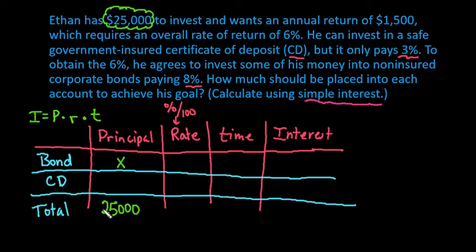Together, the bond plus the CD has to equal a total of 25,000. So since we're putting X into our bonds, whatever we put into our bonds to get the CD, we would take the 25,000 minus however much we put into our bonds.